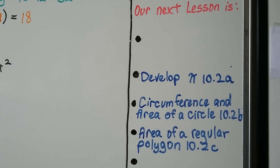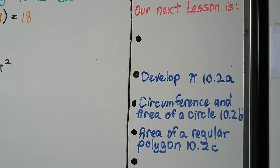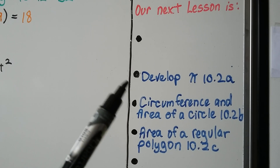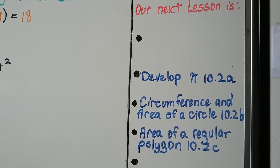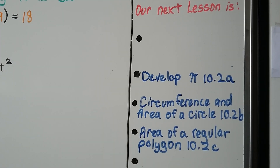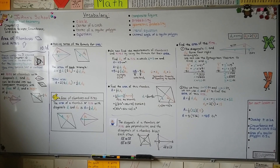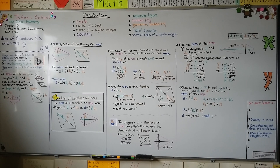So now we're done with 10.1 — it was in four parts: A, B, C, D. We're going to move on to 10.2, where we'll develop pi and talk about the circumference and area of a circle, as well as the area of a regular polygon. I'll have a link in the description about tangram puzzles. That's the area of rhombuses and kites — that's why we use that formula. Hope to see you next time and hope you have a great day!